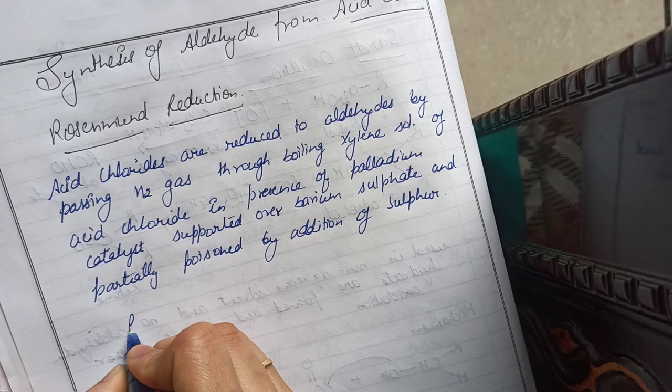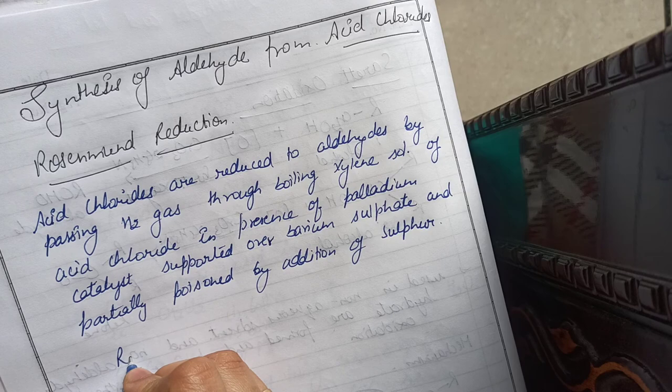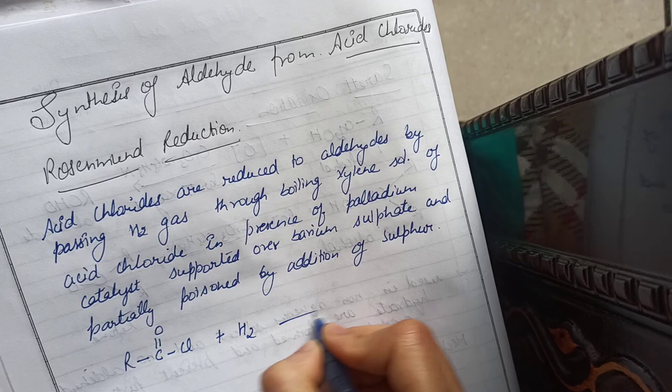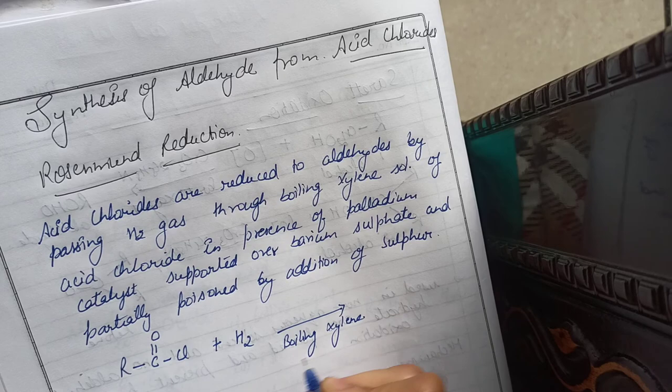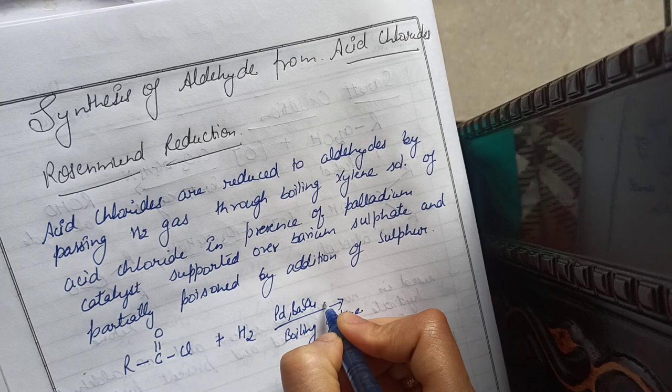The acid chloride is written as RCOCL. By passing H2 gas in boiling xylene solution with Pd catalyst, barium sulfate (BaSO4), and sulfur as conditions.